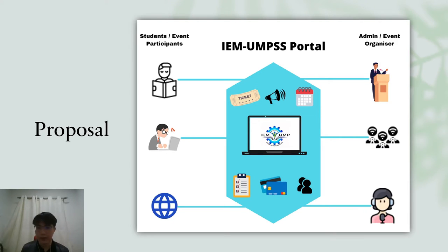This is the infographic on the IEM-UNPSS portal. Using our system, students or event participants can view organization information, view announcements, view events, select and buy event tickets, as well as make payment. Meanwhile, admin can use our system to create new events, set event ticket price or participant fee, edit event details, make announcements, and edit organization information.